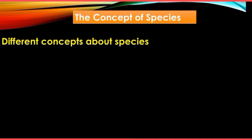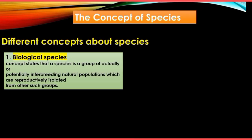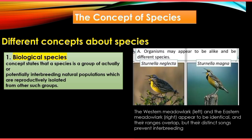Talking about species, there are different concepts about them. The first one is biological species. This means that even though organisms look alike or have similarities, it is very possible that they do not belong to the same species — because they cannot reproduce. As shown in the diagram, they look the same, however they cannot interbreed. They have their own particular way of mating.